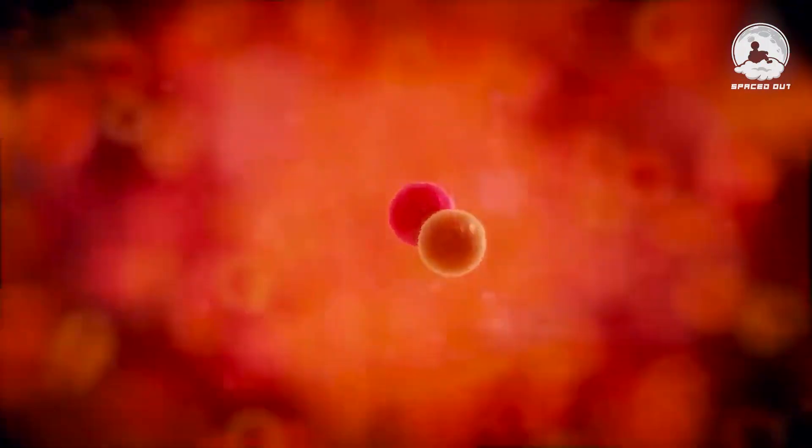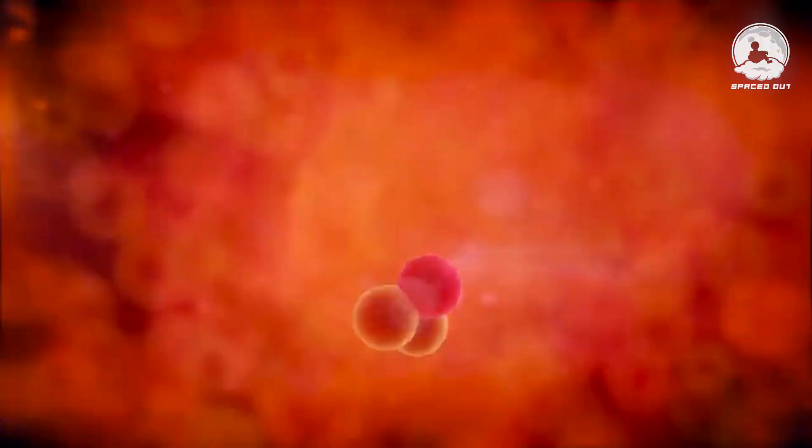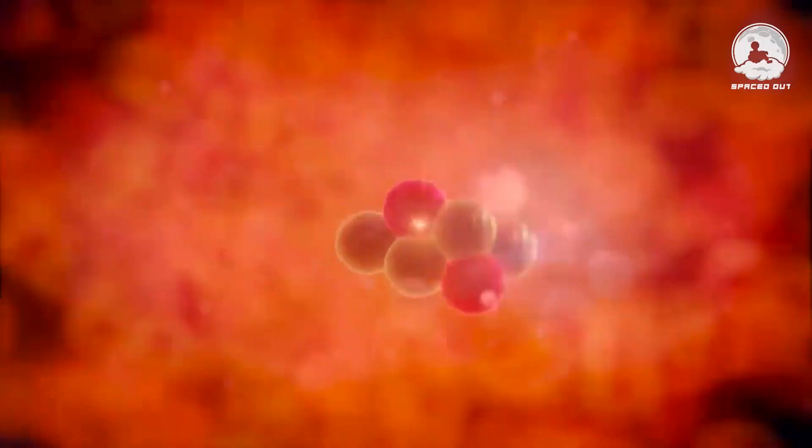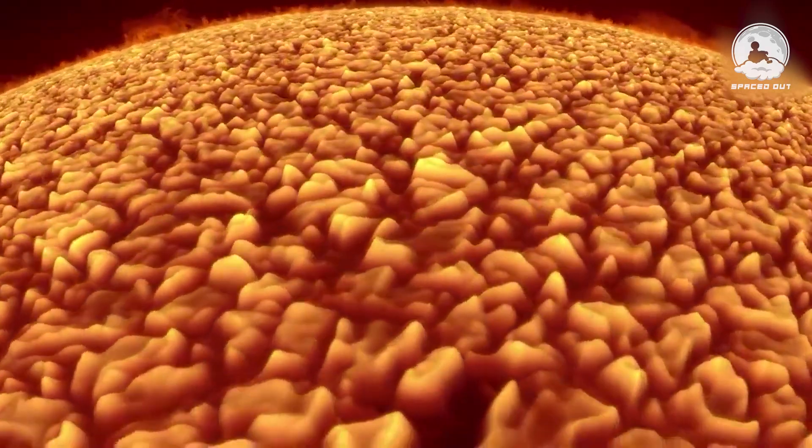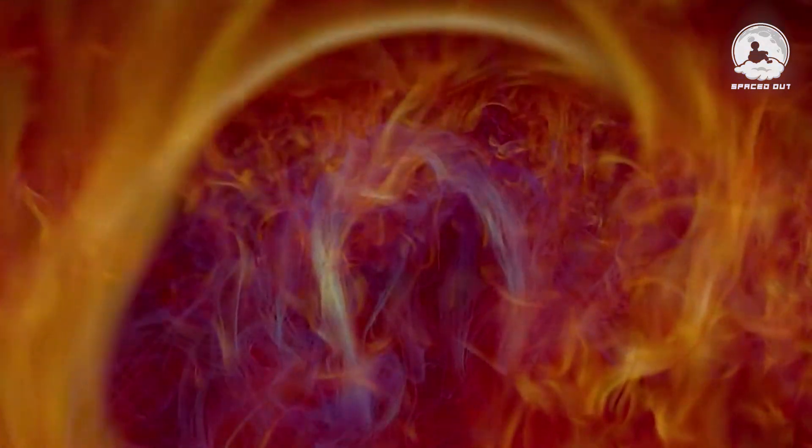As a star progresses through its life cycle, the fusion of elements becomes a captivating sequence. Carbon burns and transforms into neon over the course of centuries. Neon, in turn, transitions to oxygen in just a year. The journey continues with oxygen evolving into silicon within a matter of months. And ultimately, silicon undergoes a swift transformation into iron in a single day.